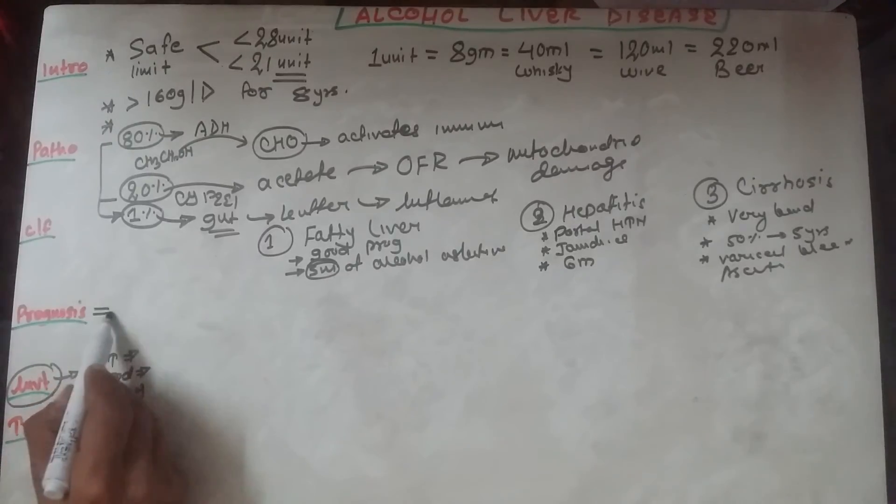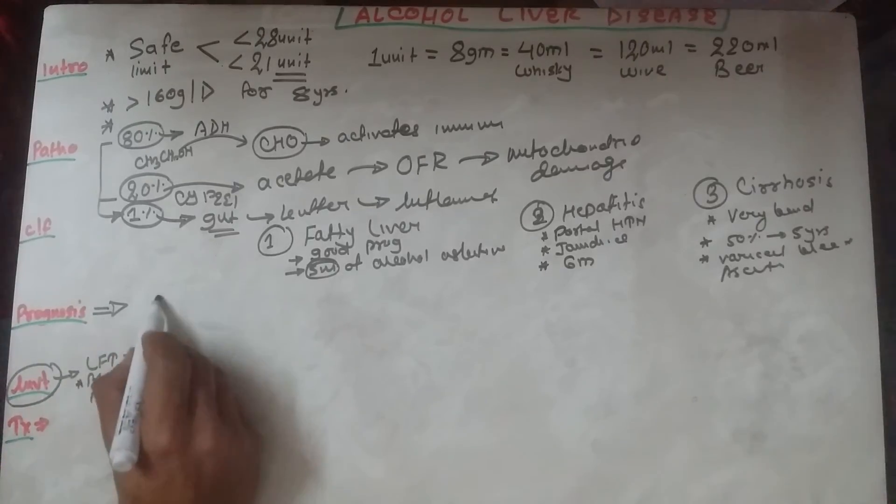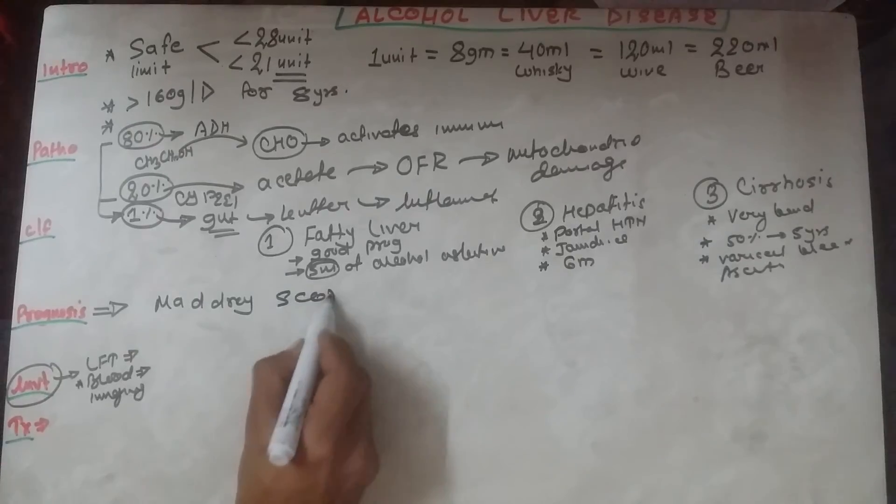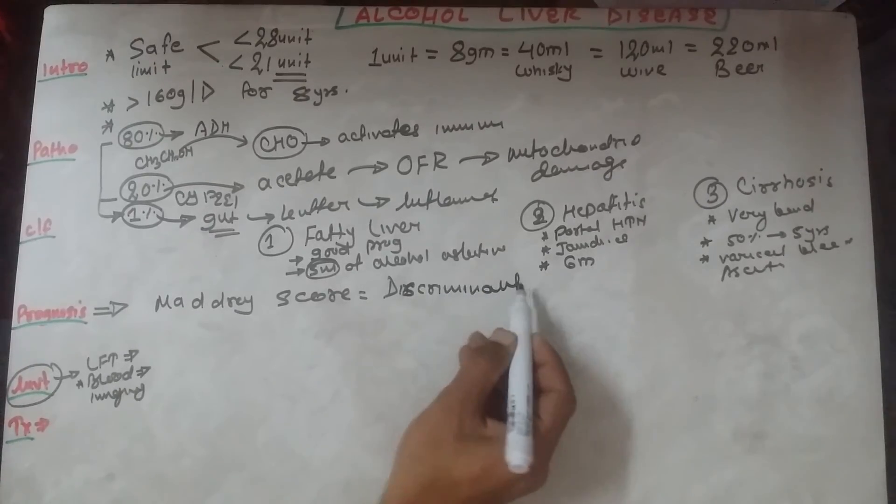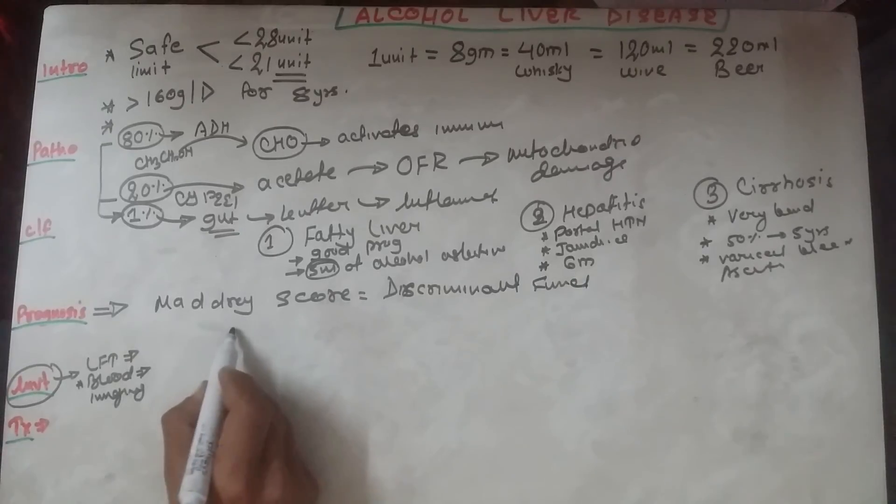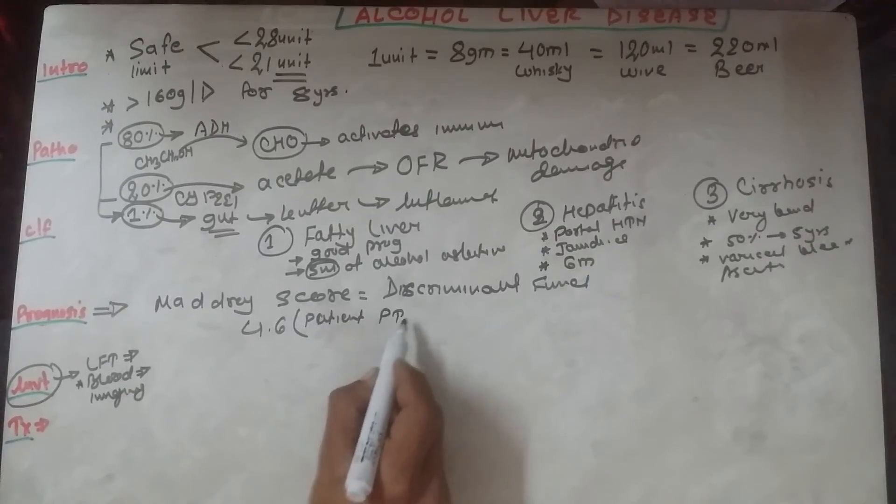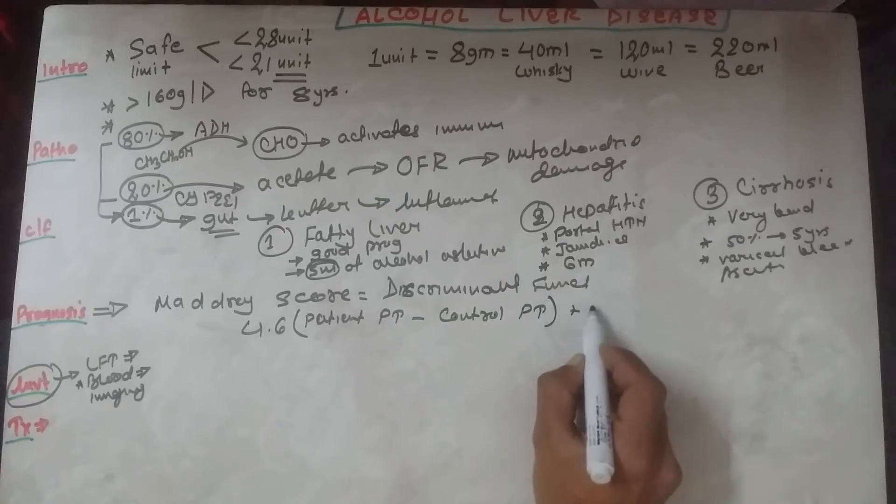Now the prognosis. The prognosis of alcoholic liver disease is determined by the Maddrey score or discriminant function. It is obtained by a formula: 4.6 times the patient's prothrombin time minus control prothrombin time, then add the bilirubin level.